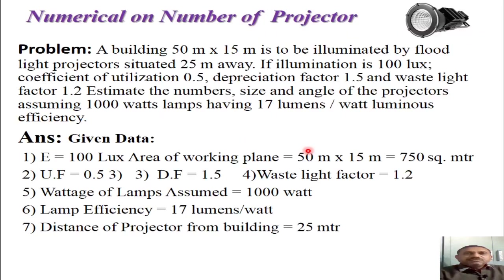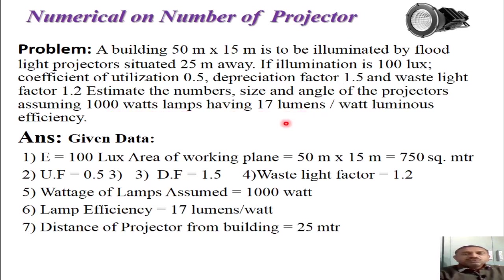Now let us apply this equation to a numerical problem. The problem statement is: a building of 50 meter by 15 meter is to be illuminated by floodlight projectors situated 25 meters away from the building surface. The illumination level is 100 lux, the coefficient of utilization is 0.5, the depreciation factor is 1.5, and the waste light factor is 1.2. Estimate the number, size, and angle of projectors, assuming each projector contains a 1000 watt lamp with 17 lumens per watt luminous efficiency.